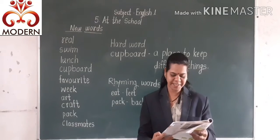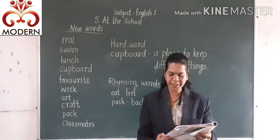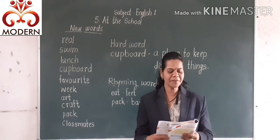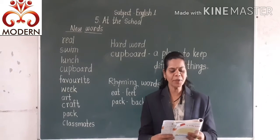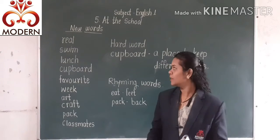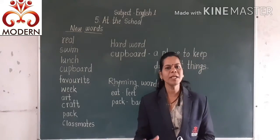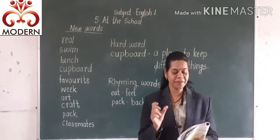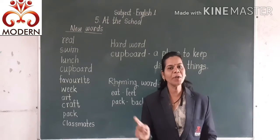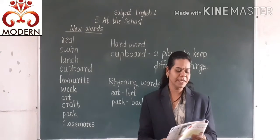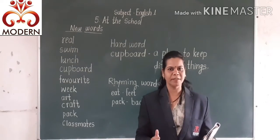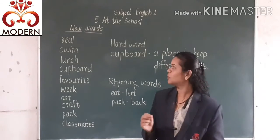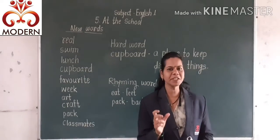Students, this is our English textbook, page number 33. A real fish is swimming round and round in a fish bowl. In this fish bowl, a real fish is swimming round and round.